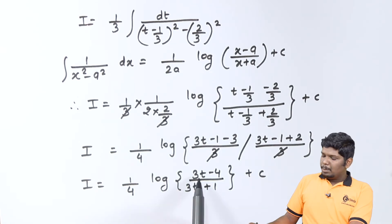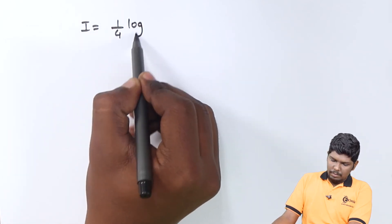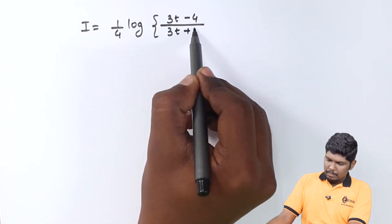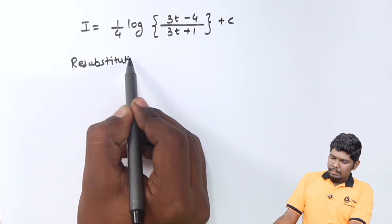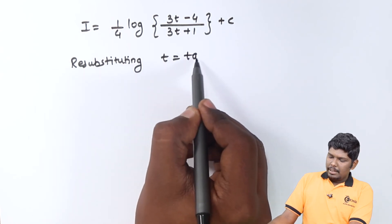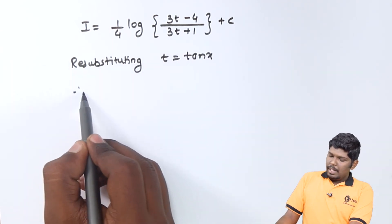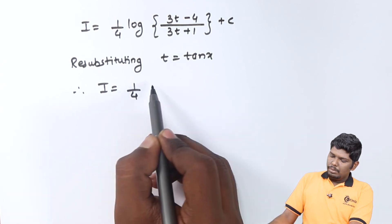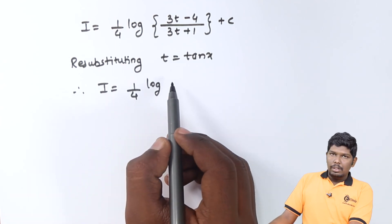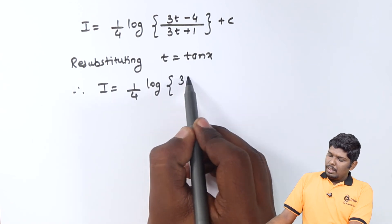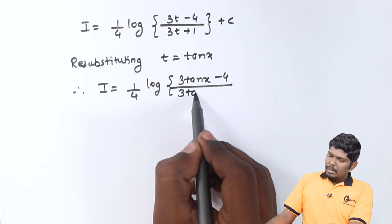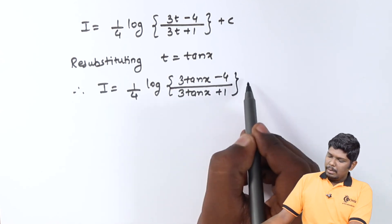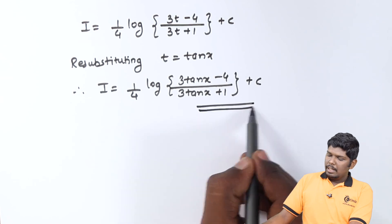The last step is resubstituting the value of t as tan x. Therefore I equals (1/4) log|(3·tan x minus 4)/(3·tan x + 1)| + C. This is our final answer.